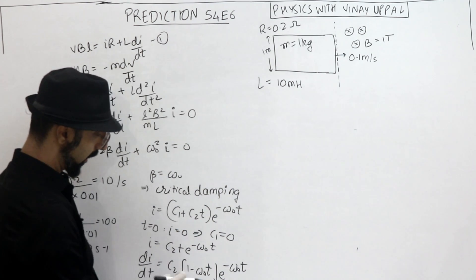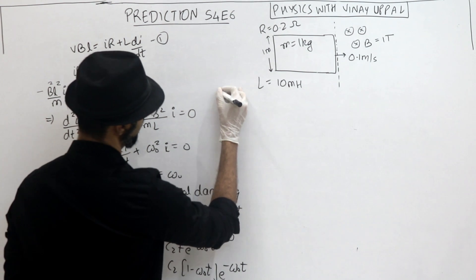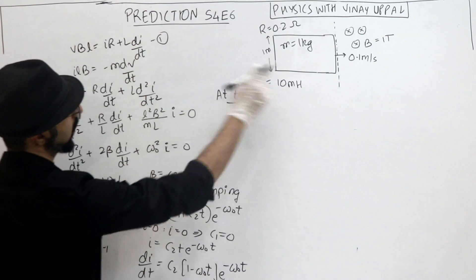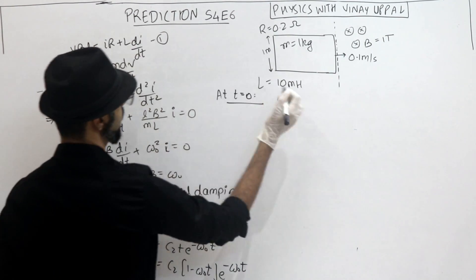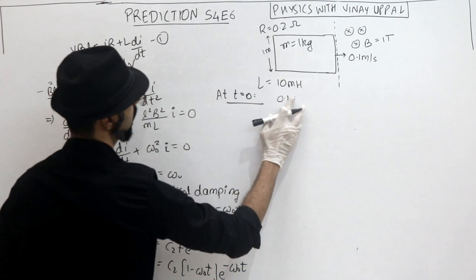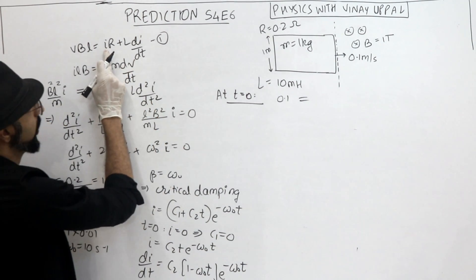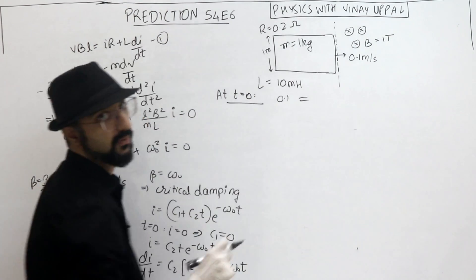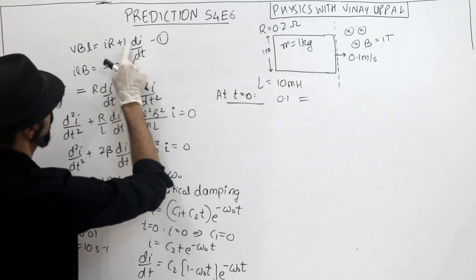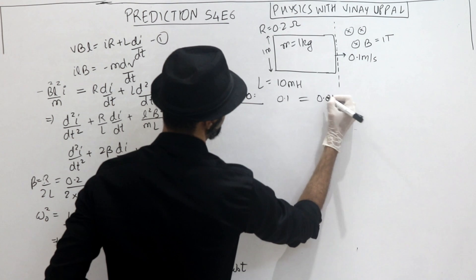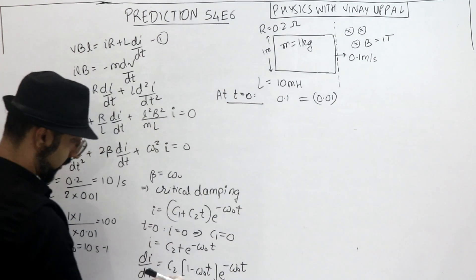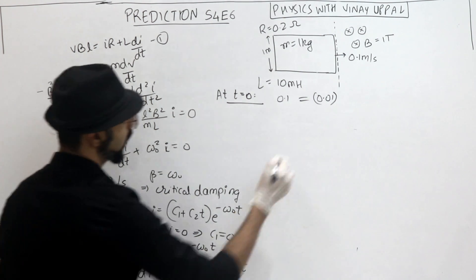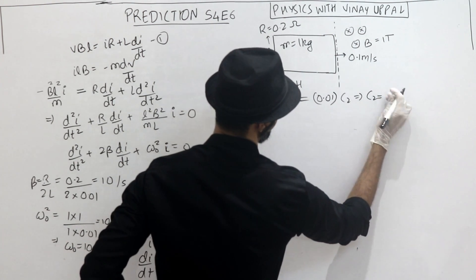Okay? So t equal to 0, di/dt ka value, at t equal to 0, I am going to write equation 1. Velocity ka value kittane, 0.1 into 1 tesla into 1, okay? Should be equal to, initial current kittana hai, 0? Yes, ye pura equation me, t equal to 0 par likh rao. Because I have to use somehow this t equal to 0 par velocity information. Okay? Should be equal to L di/dt. So L is 0.01 into di/dt is this. t equal to 0 per di/dt kittana ho ne ka? Simply C2, right? Ye 0 ho jayega, ye 1 ho jayega. So C2 ka value aa jayega 10.